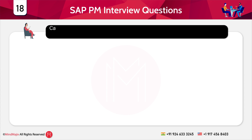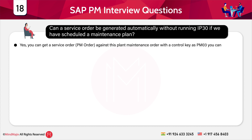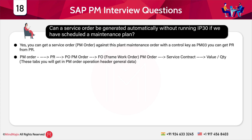Can a service order be generated automatically without running IP30 if a maintenance plan is scheduled? Yes, you can get a PM order against the plant maintenance order with control key PM03. You can also get a PR, and from the PR get a service order via MM integration. If the auto PO concept is used, auto PO gets generated. To avoid a lengthy process you can use code IP10. During each IP10 run, if the call falls within the date, you get a maintenance call object: PM order > PR > PR/PO > PM order > FO (framework order) > PM order > service contract and value/quantity.